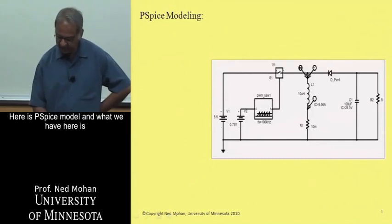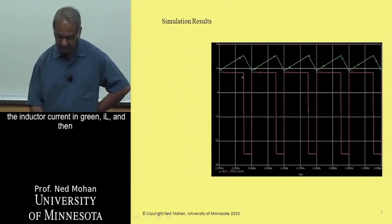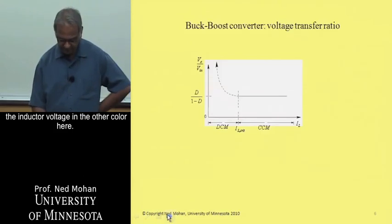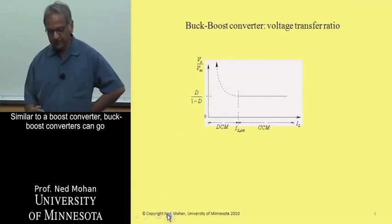Here is the PSPICE model. And what we have here is the inductor current in green, I L, and then the inductor voltage in the other color here. Similar to a boost converter,